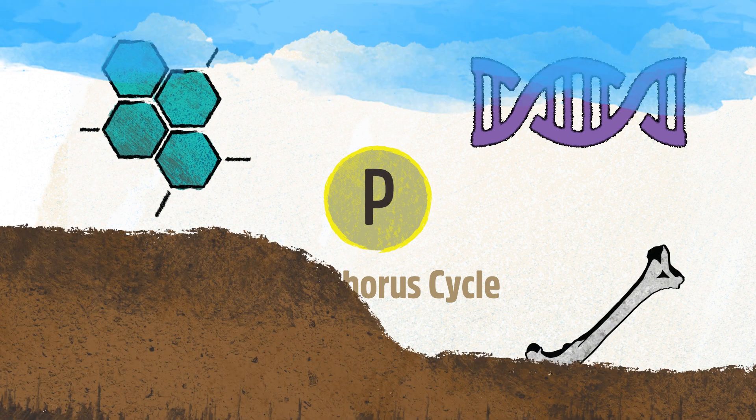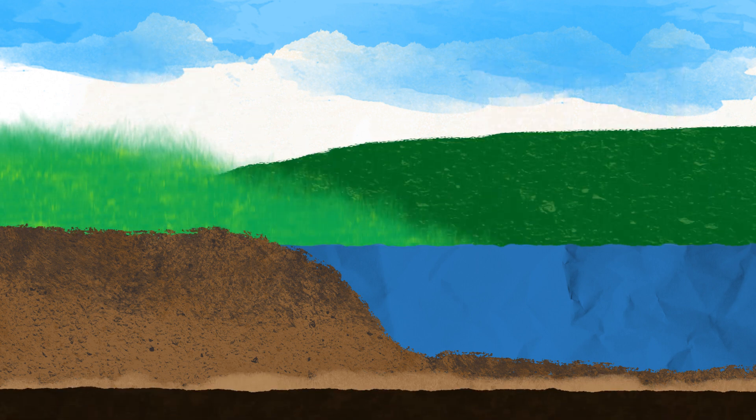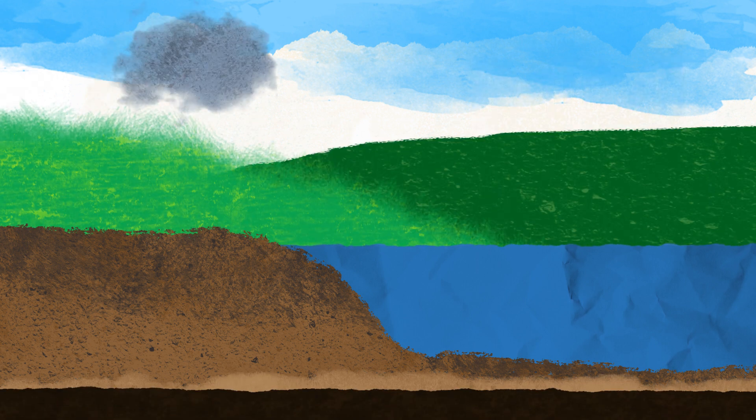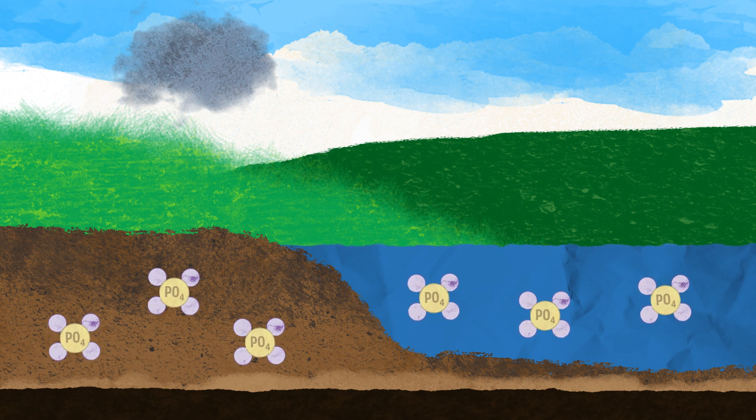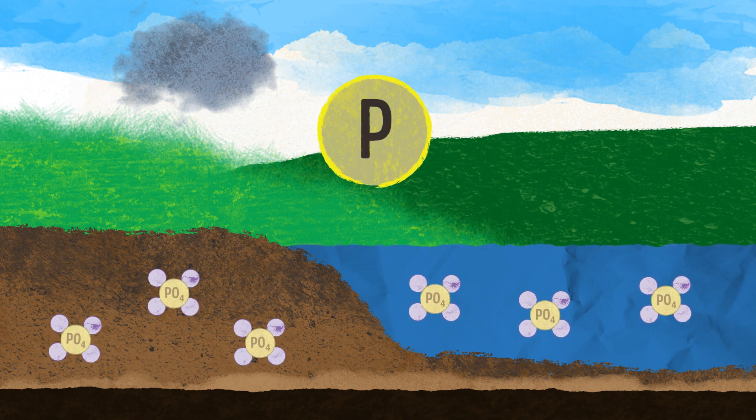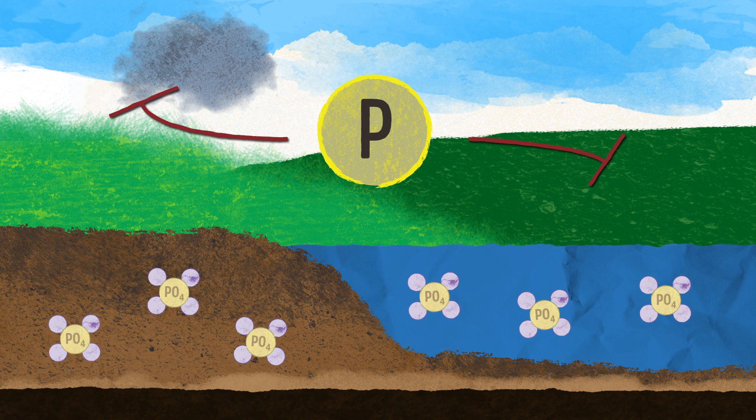The phosphorus cycle acts to maintain a relatively stable amount of phosphorus in the soil and water. Phosphate, a combination of phosphorus and oxygen atoms, is stored in soil and water. Phosphorus, unlike other biogeochemical cycles, does not cycle through the atmosphere.